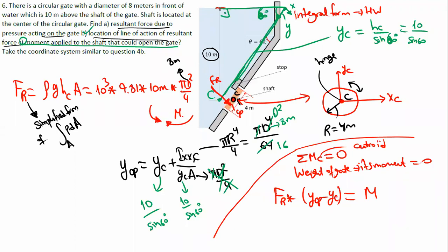That moment equals the reaction moment Mr. The water tries to open the gate in one direction, and you must apply some extra moment to prevent it. If you find this value, that will be the moment applied by the water to open the gate, and any structure preventing that opening must provide this amount of moment. With this, I finish this question.